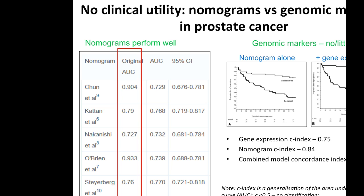A nomogram is a scoring system that takes into account a number of clinical parameters of a patient's disease. Based on that set of parameters, it calculates a score that is a risk assessment of cancer progression, recurrence, or poor outcome. Nomograms are statistical formulas that take binary or continuous data from different clinical parameters, weigh individual parameters, and output a certain score.